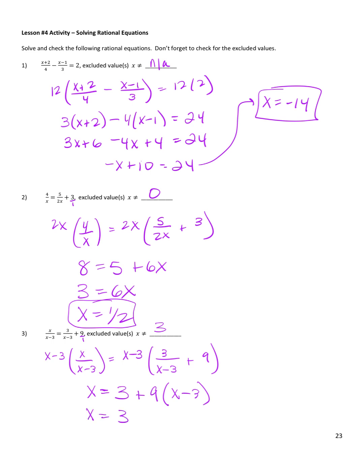So now distributing and solving: x equals 3 plus 9x minus 27. So 3 minus 27 is negative 24. Moving that to the left, 9x minus x is 8x. Divide both sides by 8 and I get x equals 3. But x equals 3 is my excluded value — that cannot be the solution, because plugging it back in gives undefined terms. It was the only solution I got, which means there is actually no solution.